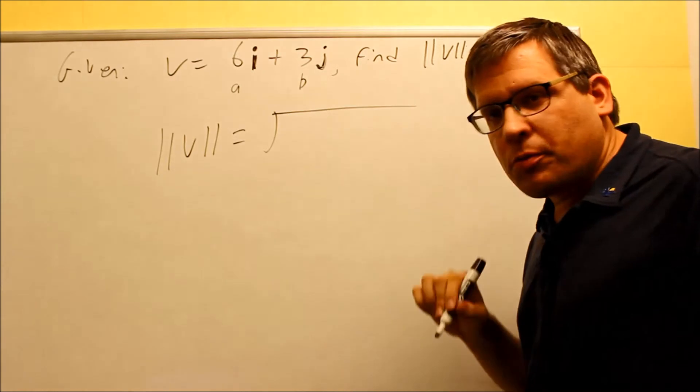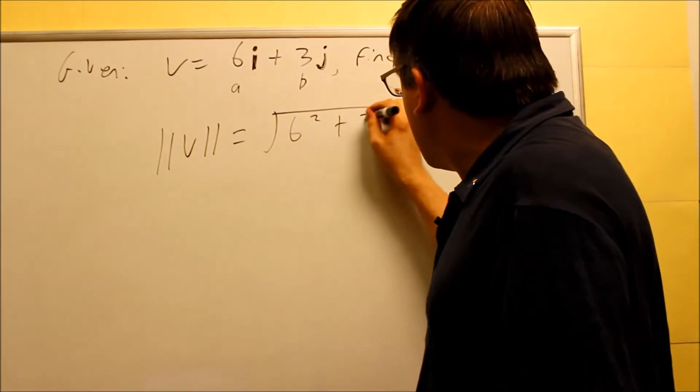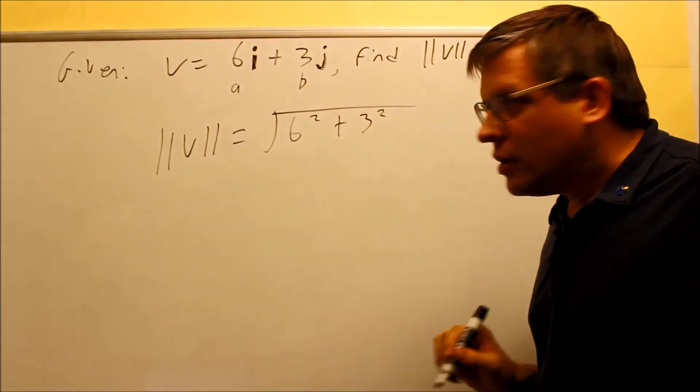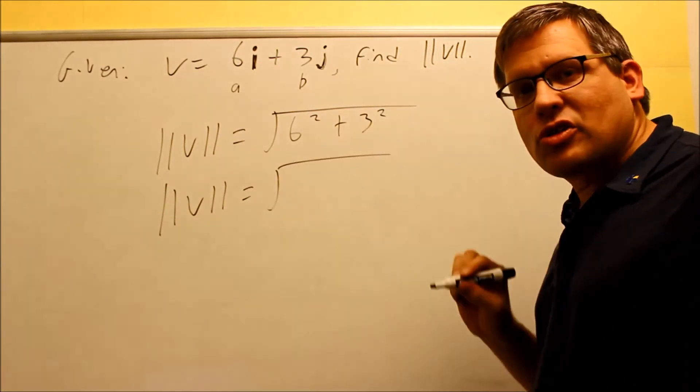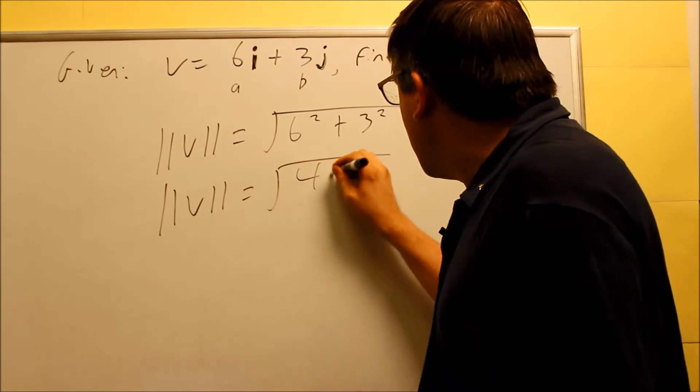6² plus 3². And we're going to simplify inside. We get 36 plus 9, that's the square root of 45.